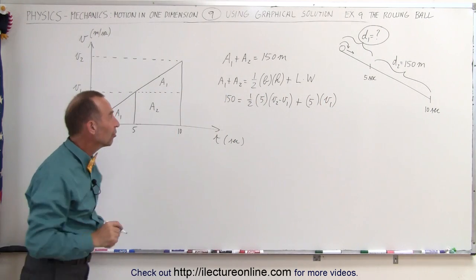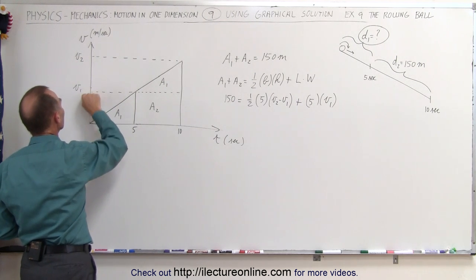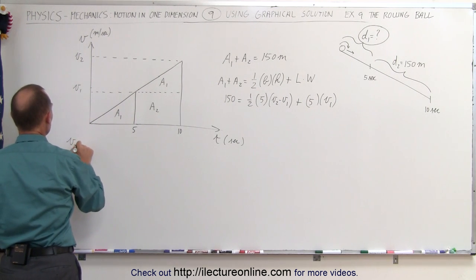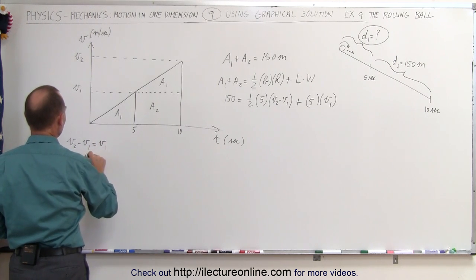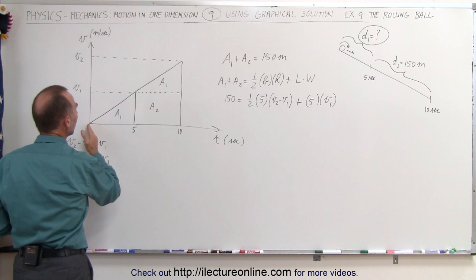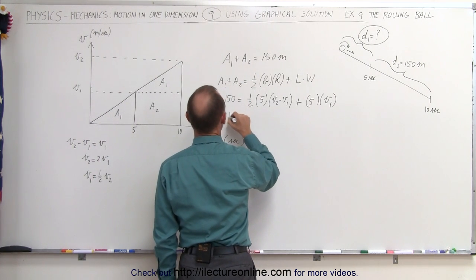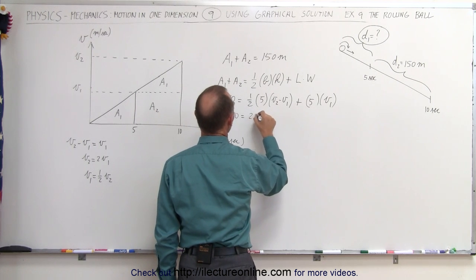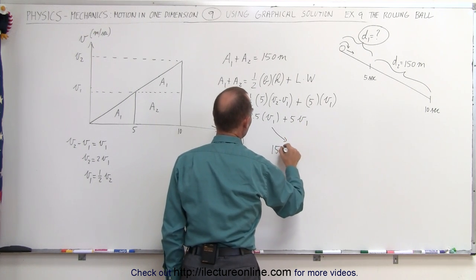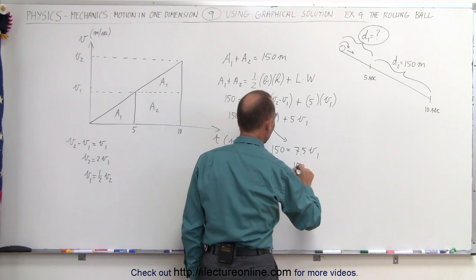Notice that the increase in speed — since the acceleration is constant and the slope is constant — means the change in velocity from zero to five seconds should be the same as the change in velocity from five to ten seconds. So V2 minus V1 should also equal V1, which means V2 equals two times V1, or V1 equals one-half V2. So we can rewrite: 150 equals one-half times five, which is 2.5 times V1, plus five times V1, giving us 150 equals 7.5 times V1.